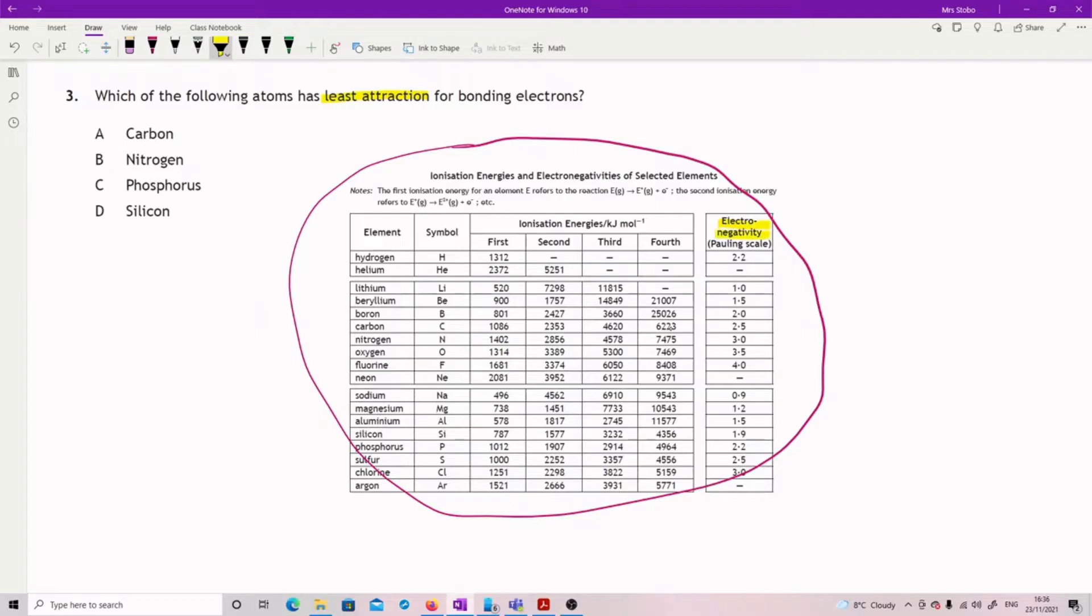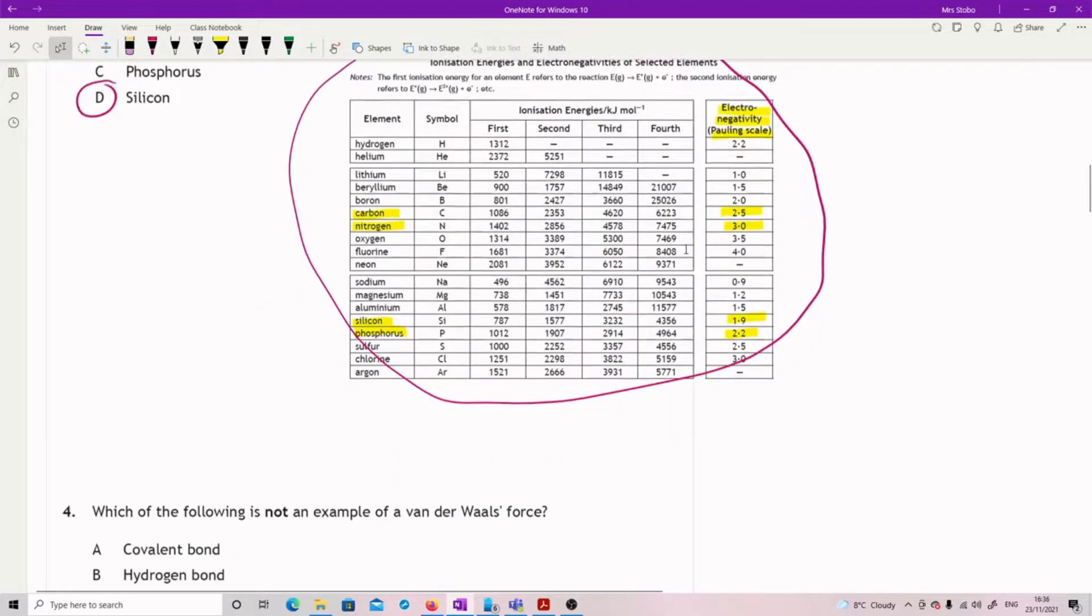We're looking at carbon here: 2.5 for carbon. Nitrogen, 3, so carbon in the lead for least attraction at the moment. Phosphorus down here, 2.2, it's taken over from carbon. And silicon 1.9 wins the whole thing. So our least attractive for bonding electrons is silicon.